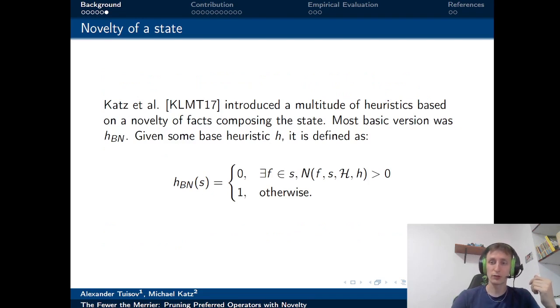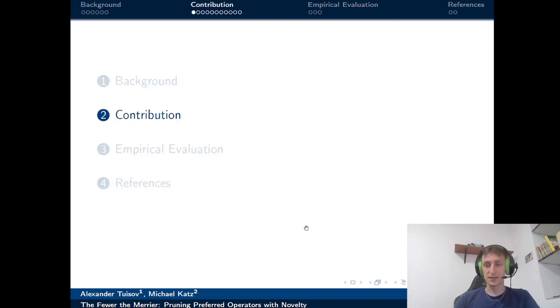Having defined novelty for a fact, we can aggregate to define novelty of states and prioritize them accordingly. The most basic way was introduced in 2017. You take a state and deem it novel if it contains at least one novel fact, giving it a heuristic value of zero, thus separating novel states from non-novel ones. That's it for the background. Let us move forward to our actual contribution.